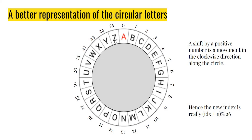Whenever I cross this boundary I go from 25 to 0, which means the new index will always be given by index plus n, which is the clockwise shift of n steps, modulo 26. Why modulo 26? Because modulo gives us the remainder — it tells us how much is left once you divide the number by 26. There are 26 alphabets and the index goes from 0 to 25, so index plus n modulo 26 gives you the new index. It's just a mathematical way of saying you are moving around this disk.